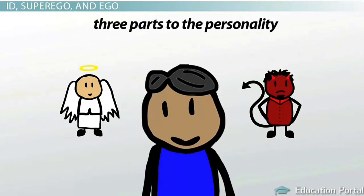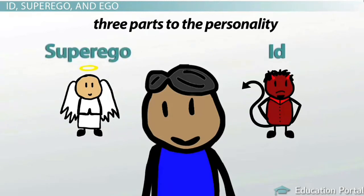This scenario is much like Freud's theory of personality. There are three parts to personality according to Sigmund Freud's psychoanalytic theory. These are the id, superego, and ego. The id is the first to develop, the ego is second, and the superego is the last to develop.